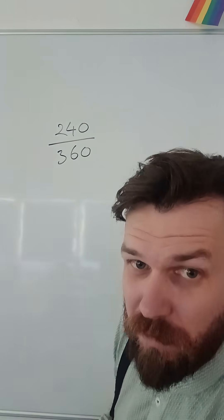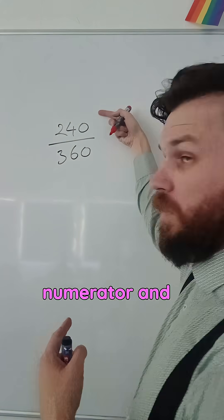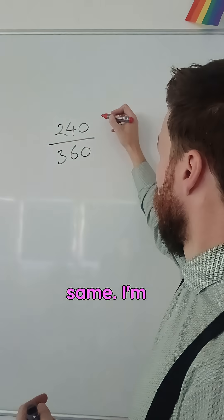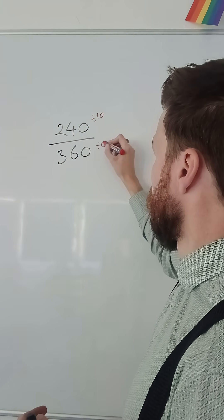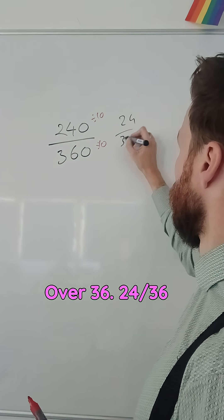So what I'm going to do first is I'm going to divide both by 10. Because as long as I'm doing the same thing to the numerator and to the denominator, the fraction will be the same. I'm going to divide by 10 both of these, and that will give me 24 over 36.